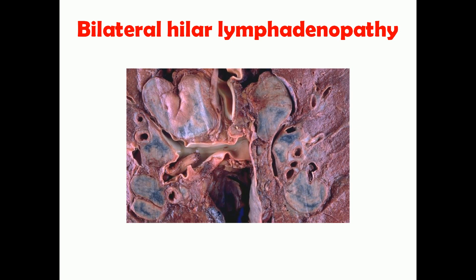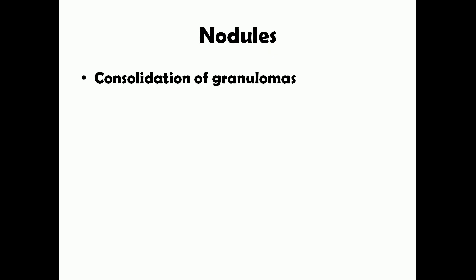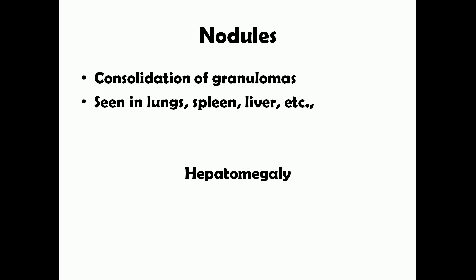The hilar lymph nodes can be enormously enlarged, as seen in the gross pathology picture. Granulomas at nearby sites join together to form consolidation and then nodules, most commonly in the lungs, spleen, and liver. As a result, the liver slowly enlarges — hepatomegaly — and the spleen also enlarges — splenomegaly. Skin lesions are very common in these patients.